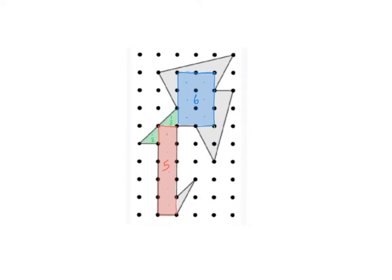Next I see a triangle right here — let me shade that in so you can see which one I'm talking about. This triangle right here is exactly half of this big rectangle. If you look at this rectangle, this triangle is half of it. This big rectangle has an area of two square units, so if the triangle is half of it, the triangle has an area of one square unit. I'll put a one on there.